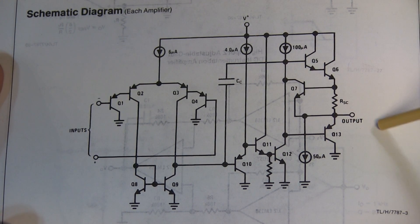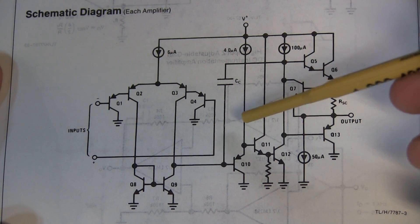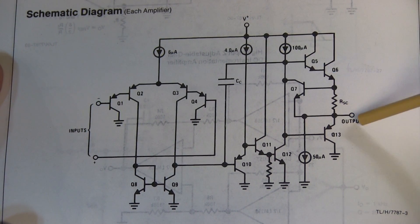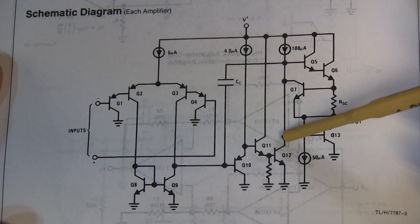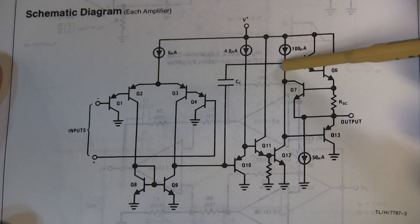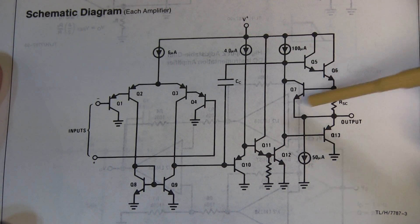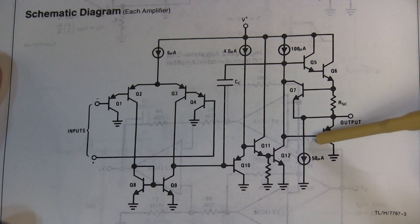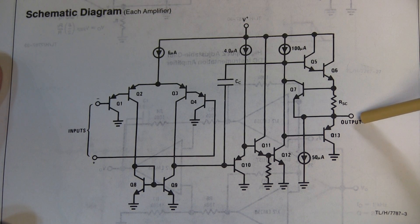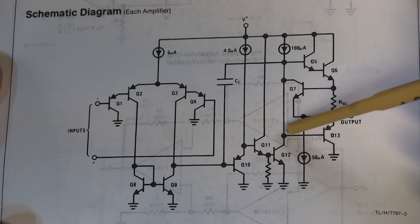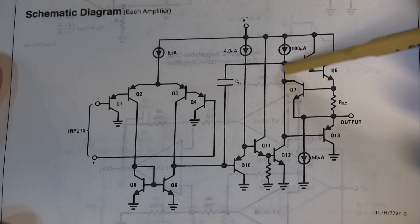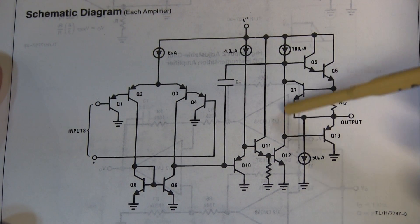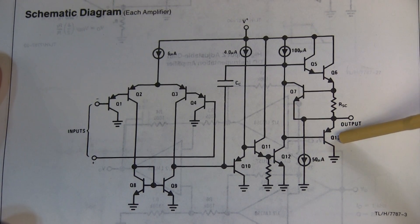When the output needs to sink current, that output starts to fall, eventually these transistors turn off and the output doesn't move anymore. So now this output has to swing very quickly from having these transistors on going down to turn on the base of Q13 so Q13 can start pulling current from the output. So that time it takes to traverse the bias condition where these transistors are on down to the point where these are off and this transistor is on, that is where the distortion happens.